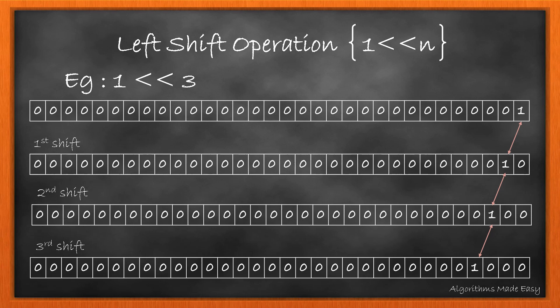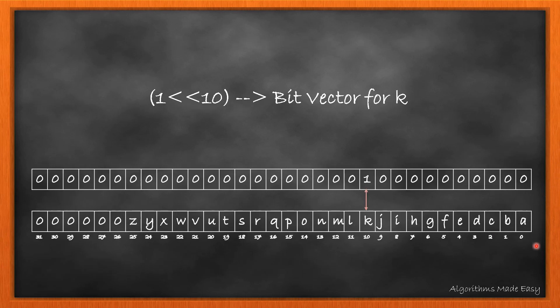What is the significance of this operation? If we view it as a bit vector, we will be marking the presence of character by 1. Let's see it with an example. 1 left shift 10 will shift 1 from the last bit to the bit that represents 'k'.